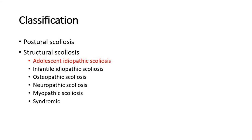Whereas for structural scoliosis, there is a non-correctable deformity of the affected spinal segment. Some types of structural scoliosis include adolescent idiopathic scoliosis, which is the most common cause, as well as infantile idiopathic scoliosis, neuropathic, myopathic, or syndromic causes.